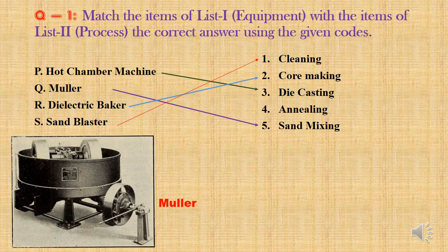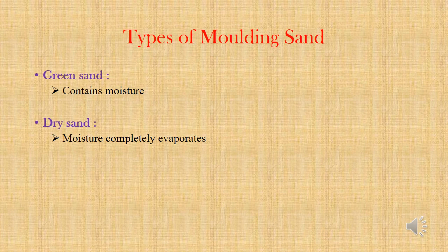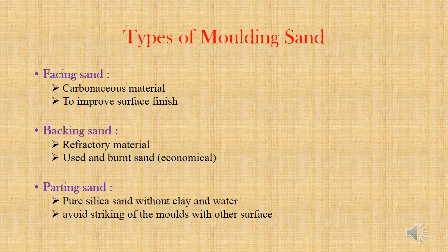Now we are going to see types of molding sand. First is green sand, which has moisture content in it. Next is dry sand, in which the moisture is completely expelled from the sand. Next sand is facing sand. This sand only will have direct contact with hot molten metal. This sand will have additives like carbonaceous material, which prevents sand from overheating and improves surface finish.